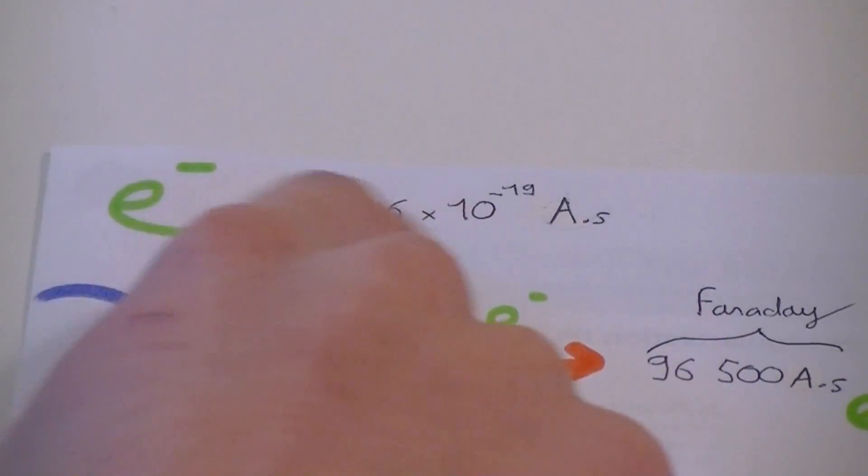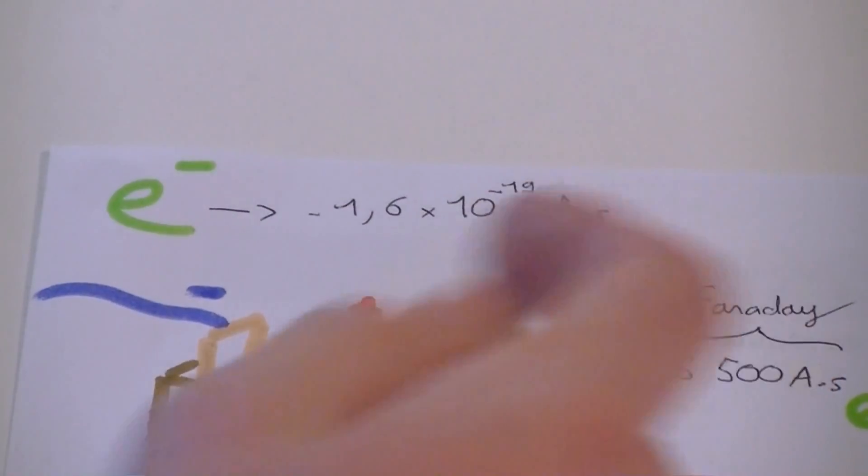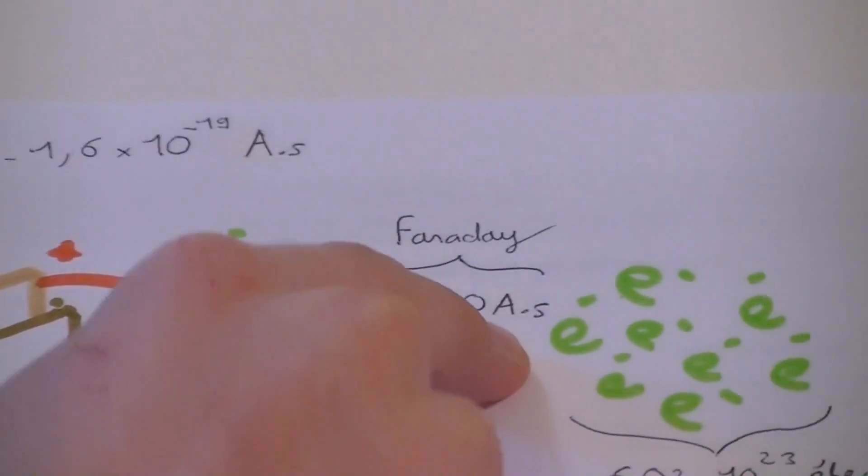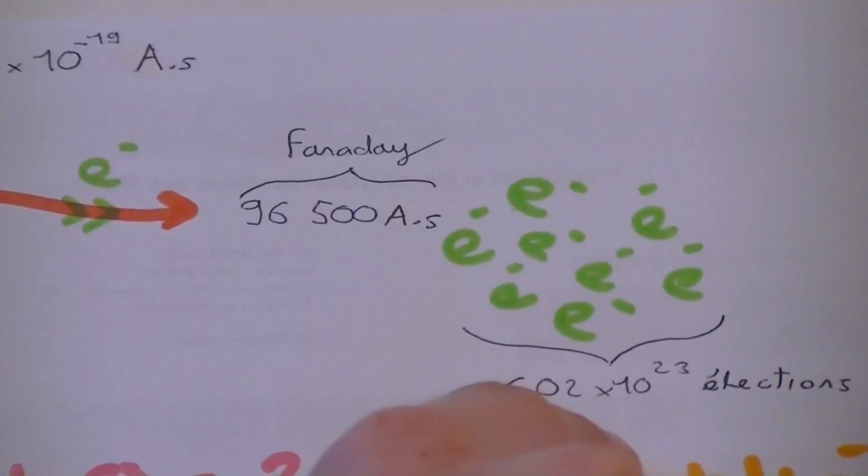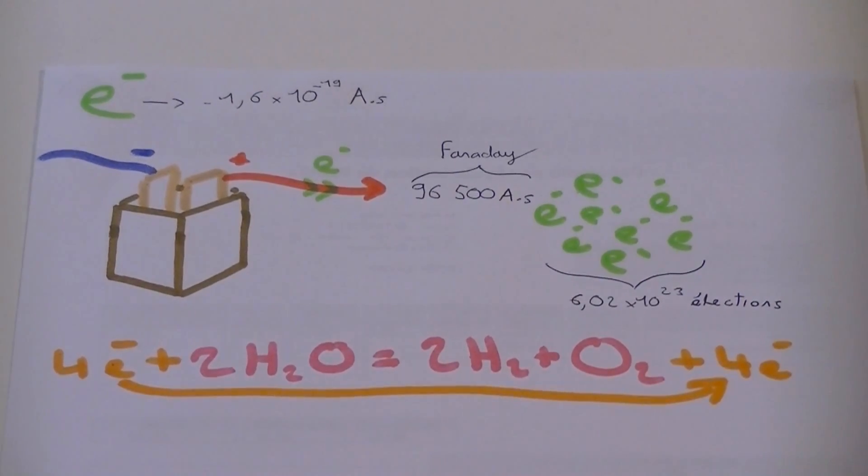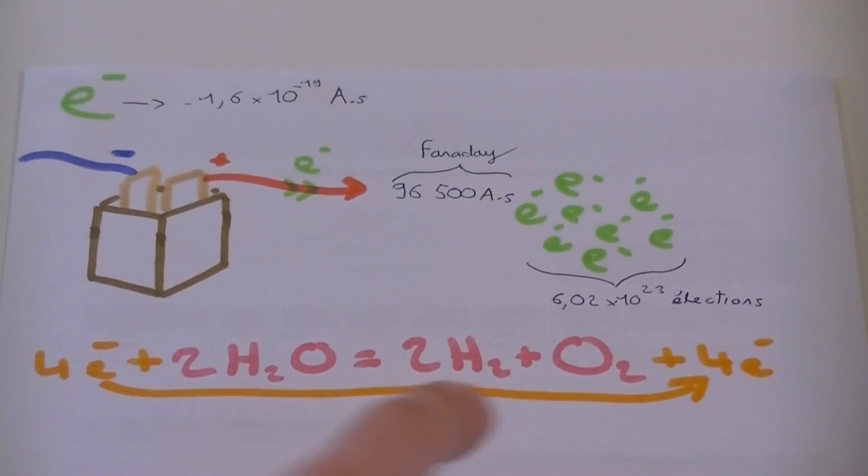Each electron carries a very weak charge, but when 1 mole of electrons has flowed, a charge of 1 faraday has been consumed. Combining this data, we can calculate that our electrolyzer generates up to 3 milliliters of gas per second.